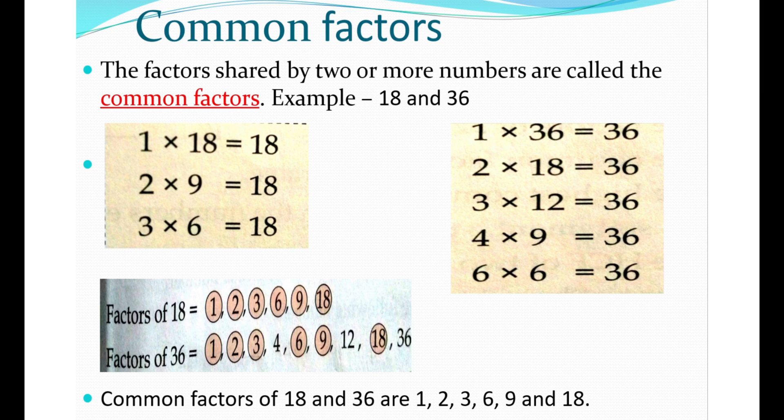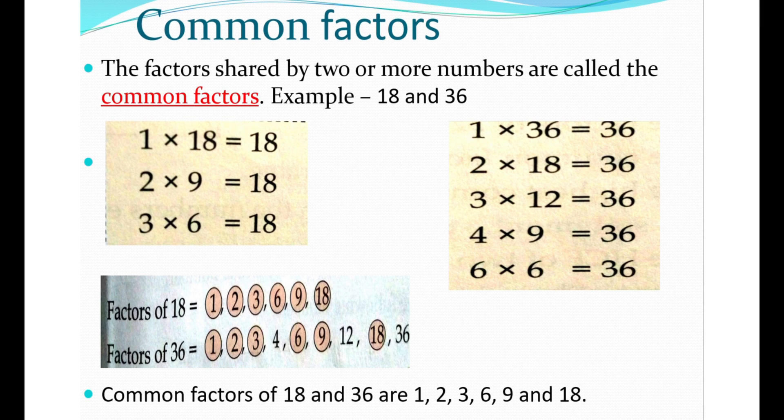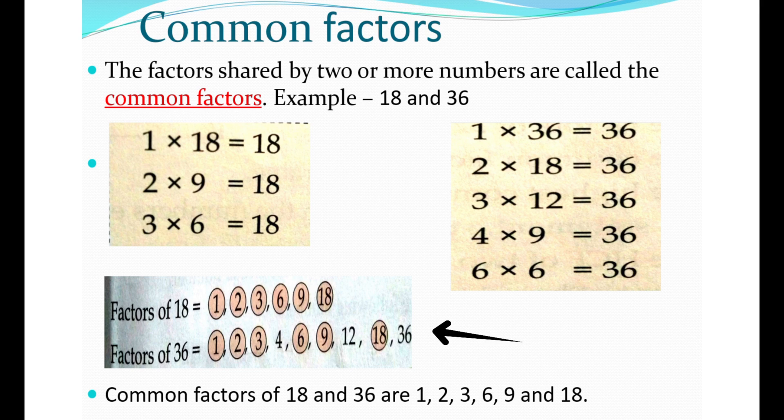Common factors: The factors shared by two or more numbers are common factors. Let's take an example of 18 and 36. The factors of 18 are 1, 2, 3, 6, 9, and 18. The factors of 36 are 1, 2, 3, 4, 6, 9, 12, 18, and 36. Here the common factors are 1, 2, 3, 6, 9, and 18.